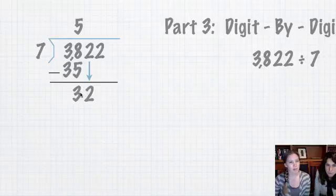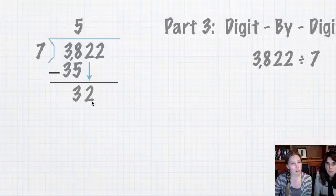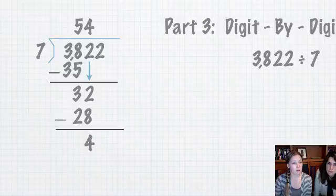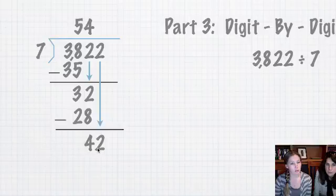Now I'm bringing down one digit, my two, my next one over. So now I'm dealing with just the number 32. So seven goes into 32 how many times without going over? And we get four. Again, notice one digit. Seven—multiply, seven times four is 28.